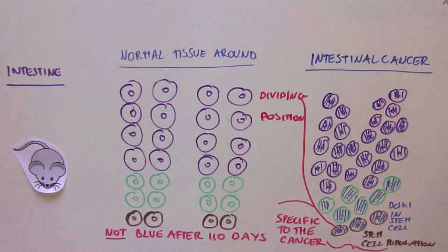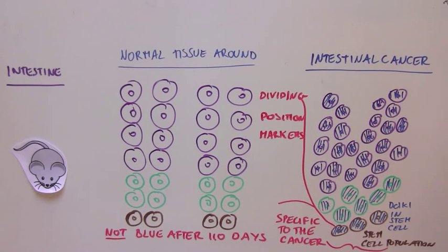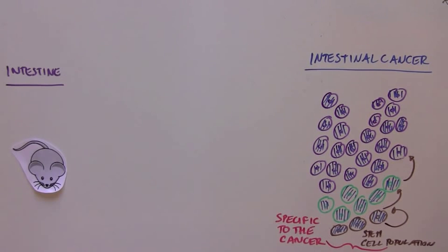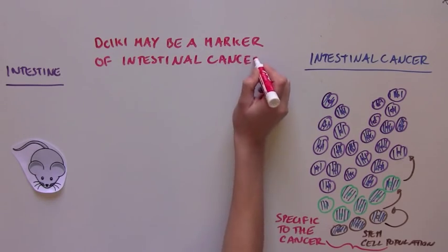These tumor DCLK1 cells also contain markers of stem cells and other stem cell characteristics. They could divide indefinitely, they could make more of themselves and they could produce differentiated purple cells of the intestine. So all of this information pointed to the fact that DCLK1 might be a marker of cancer stem cells, but not normal stem cells.